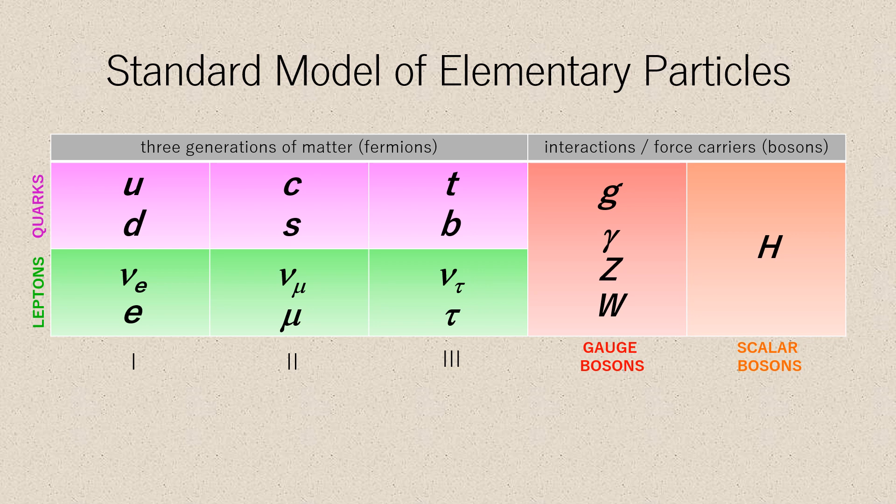Pairs from each classification are grouped together to form a generation, with corresponding particles exhibiting similar physical behavior. The defining property of the quarks is that they carry color charge and hence interact via the strong interaction. Quarks also carry electric charge and weak isospin.